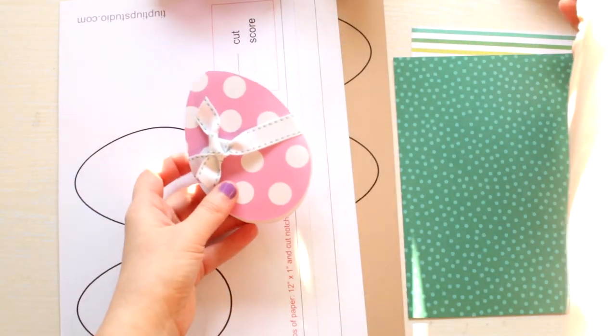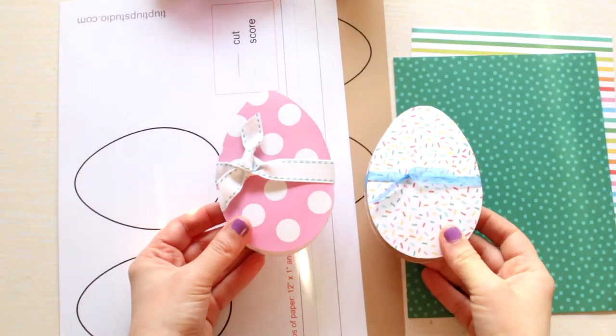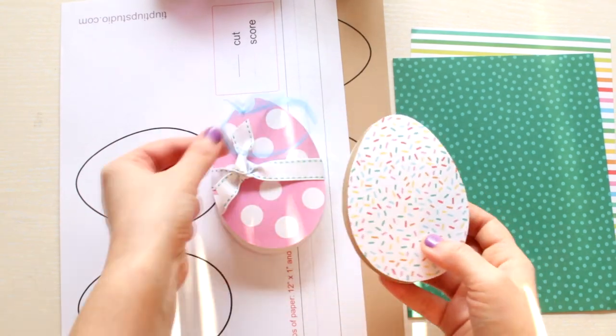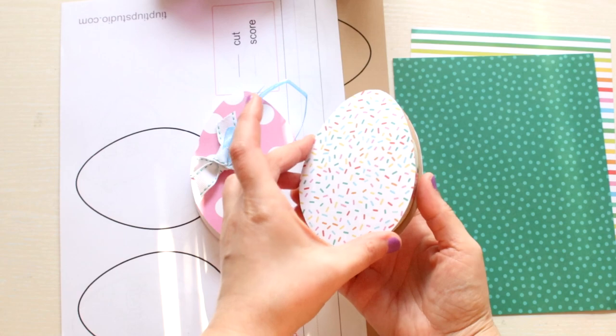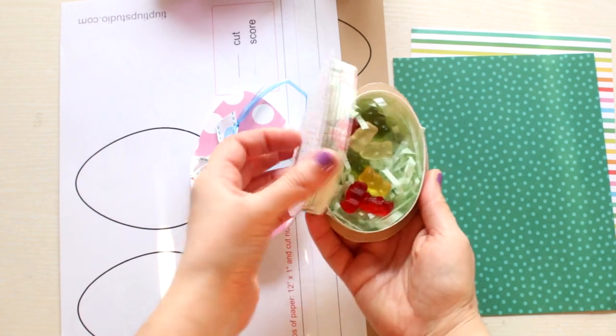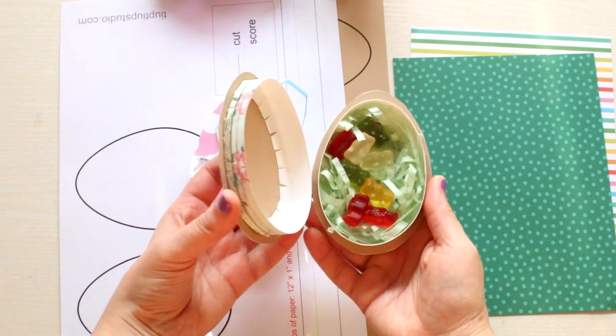First let me show you how the boxes look like. So they're tied with ribbon. The ribbon keeps the boxes closed. And when you open it, it looks something like this.